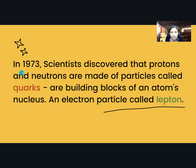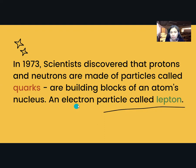In 1973, scientists discovered that protons and neutrons are made of particles called quarks, or building blocks of an atom's nucleus, and an electron particle called lepton.